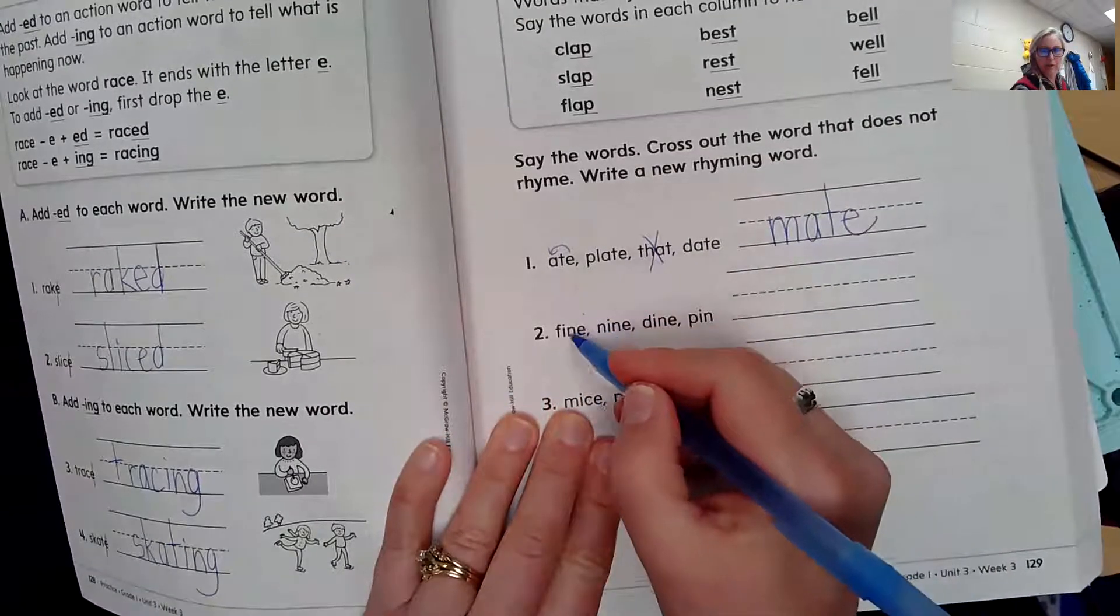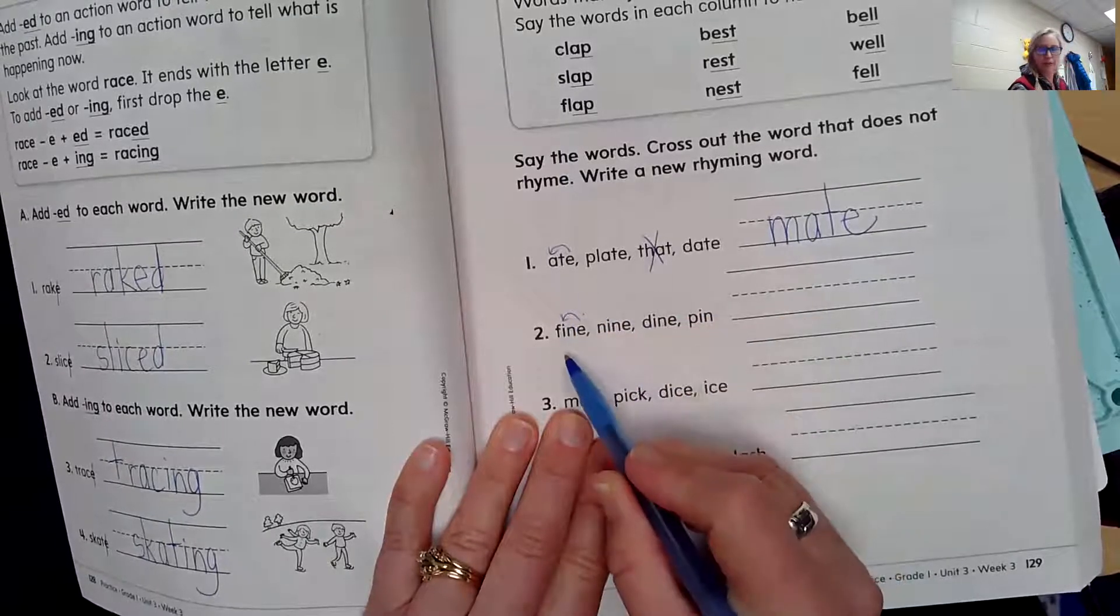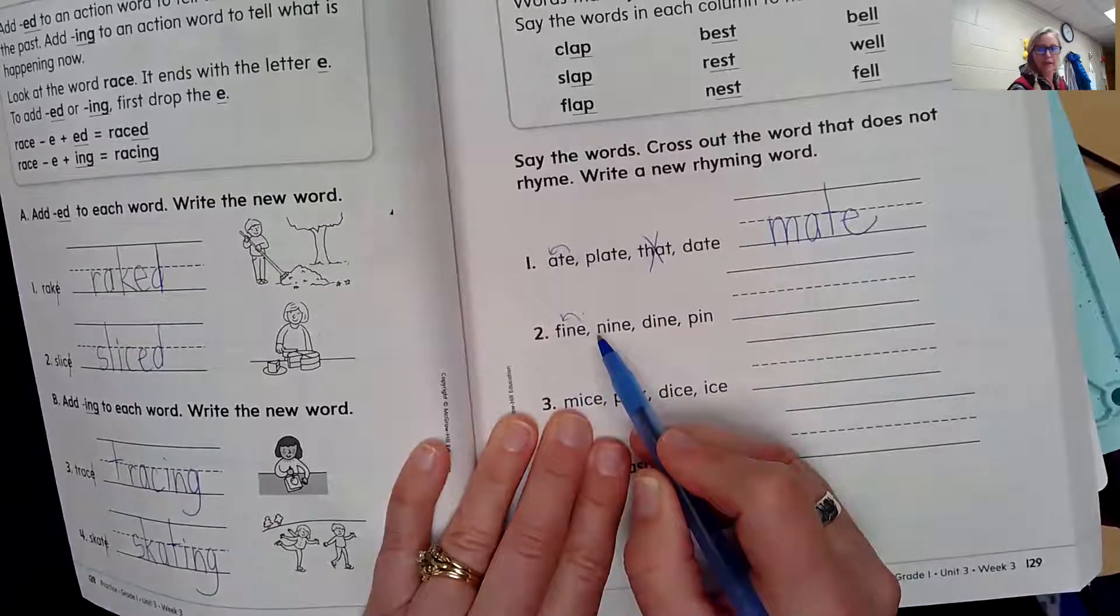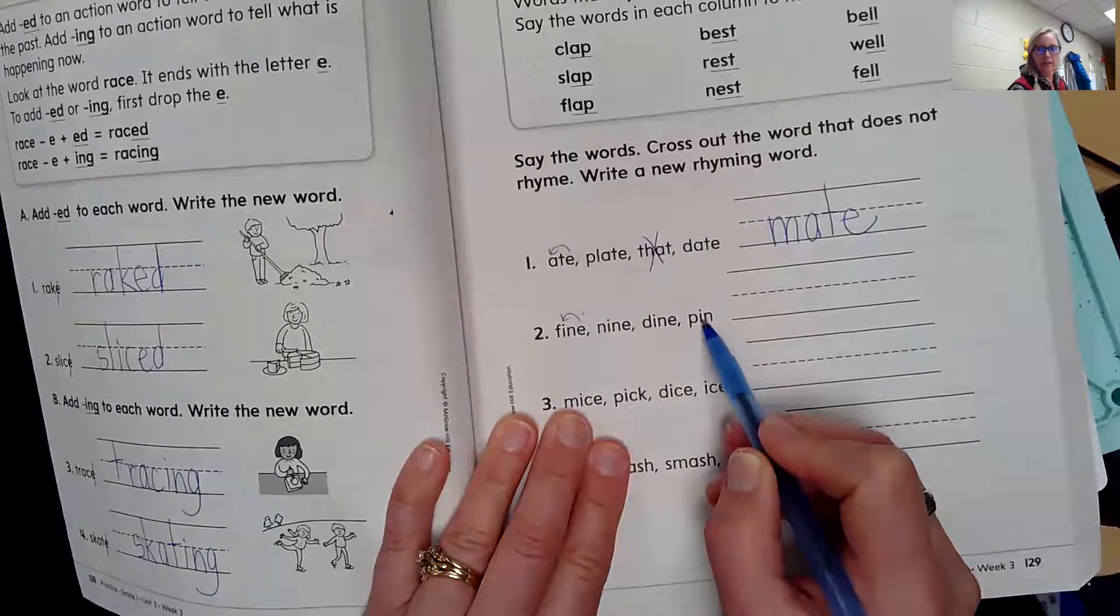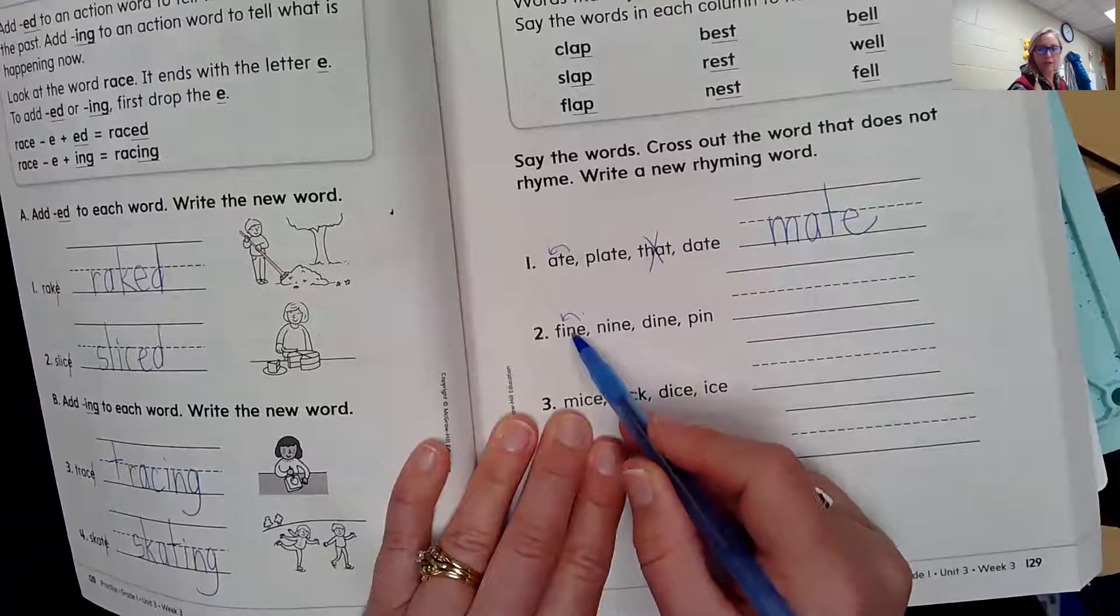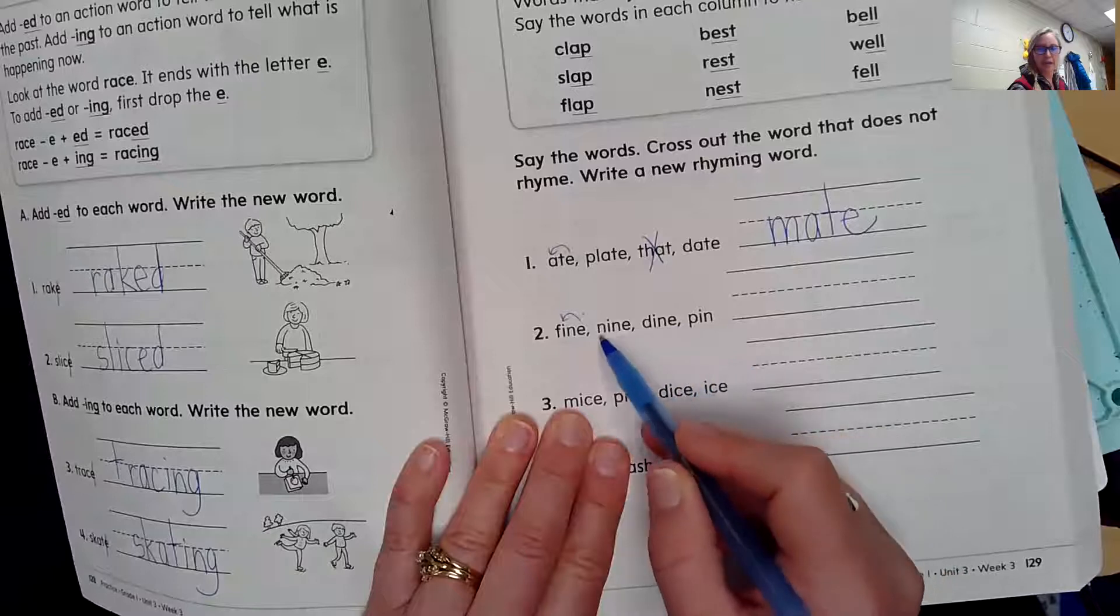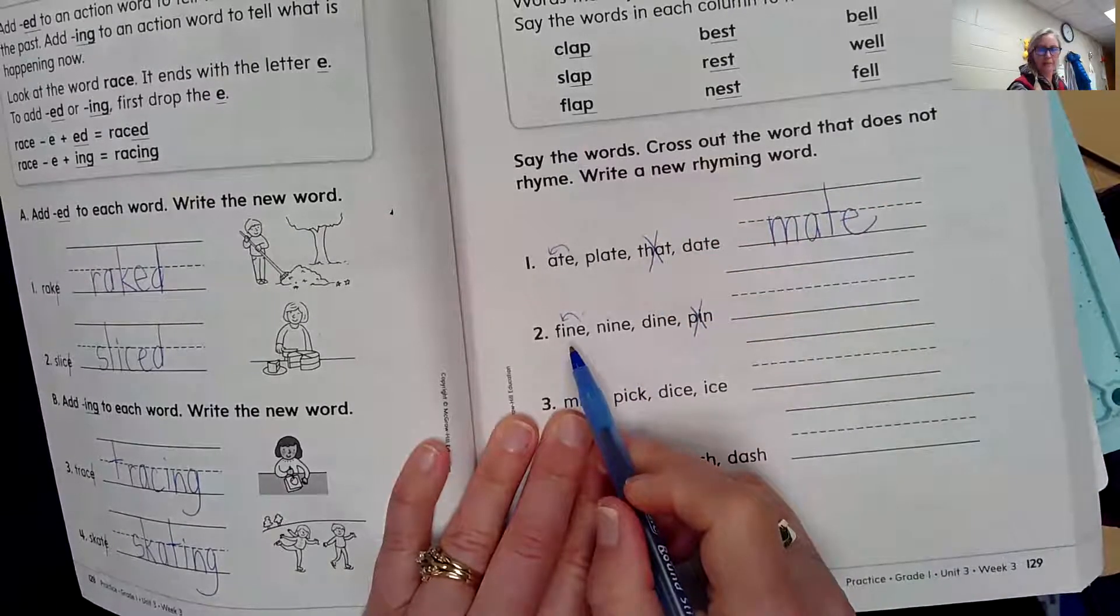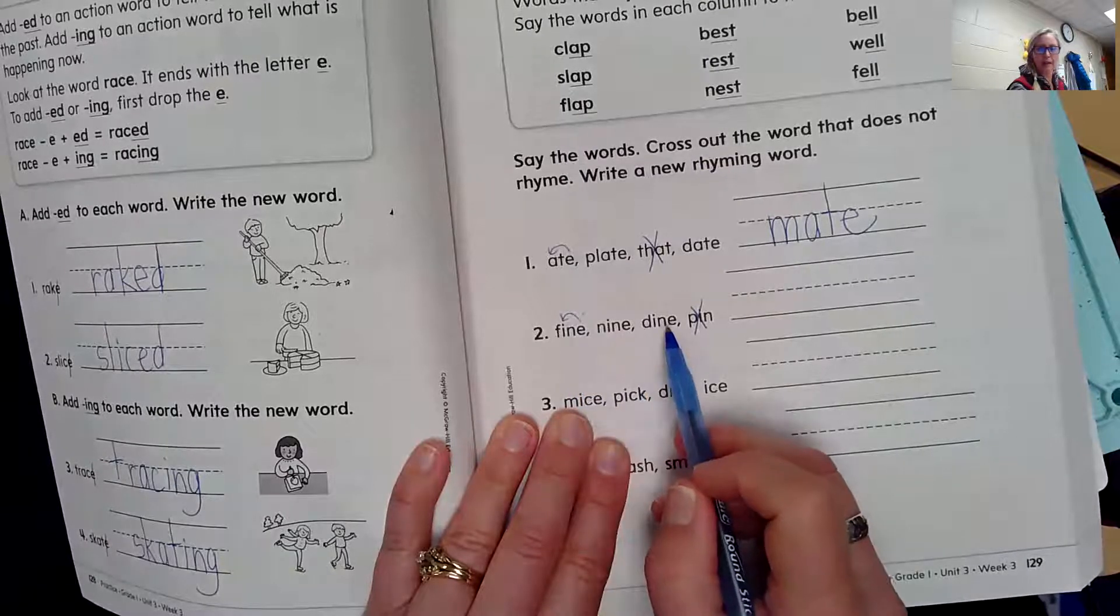Let's look down here. We have our vowel consonant E pattern. That means our I is going to say I. Let's read the words. Fine, nine, dine. This one does not have that E, so this says pin. These all say 'ine'. So pin does not rhyme.